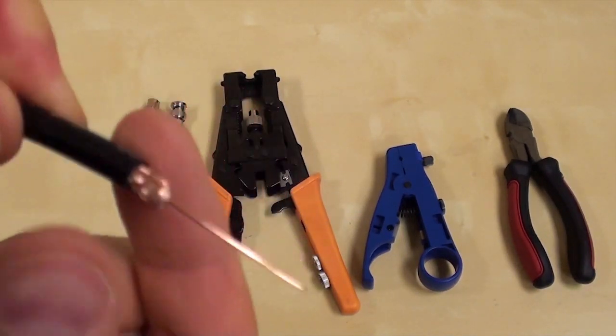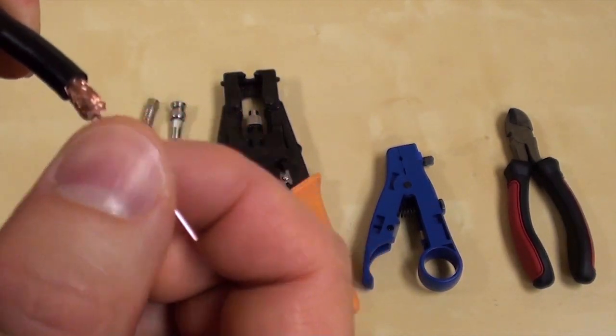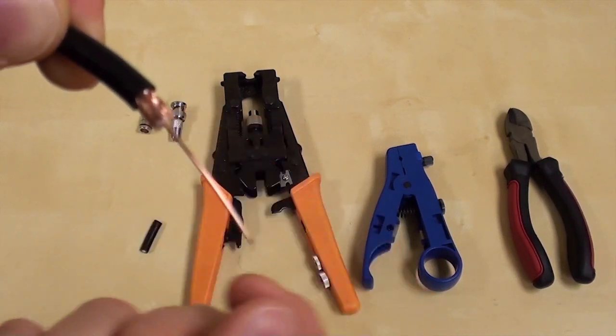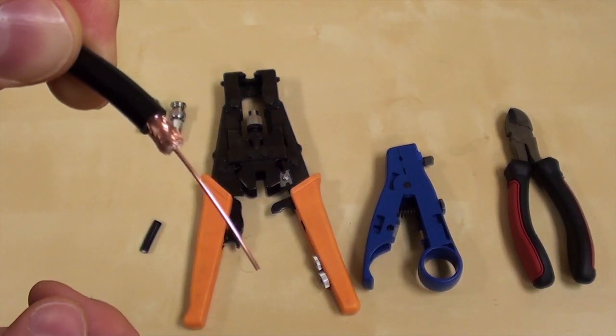The second cut only removes the outer layer of plastic jacket. And you want to be sure that all the braided copper is left in place and not cut.